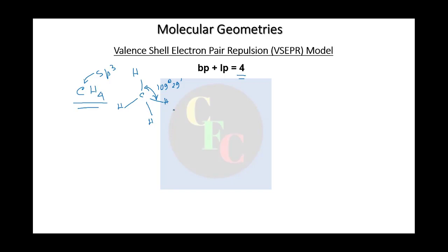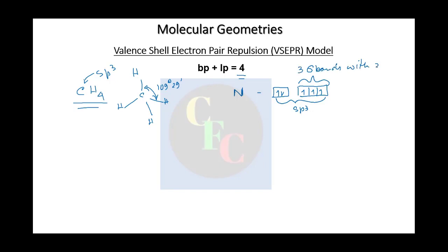Now, what if we replace one bond pair with a lone pair? The next element to carbon on the periodic table is nitrogen. In ammonia, nitrogen forms three sigma bonds — it is again sp3 hybridization — forming three sigma bonds with three hydrogens, and there is one lone pair.